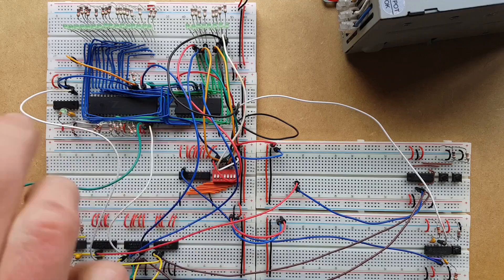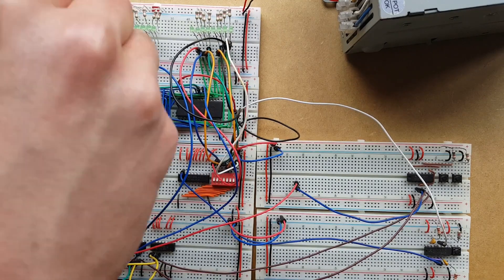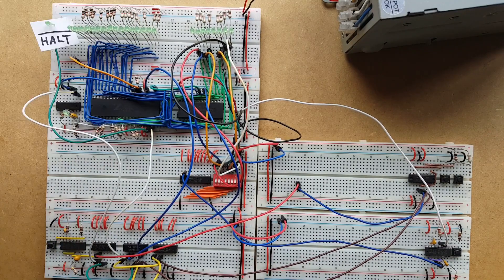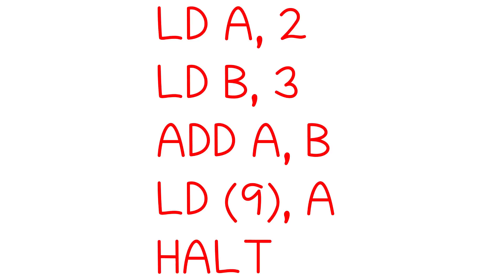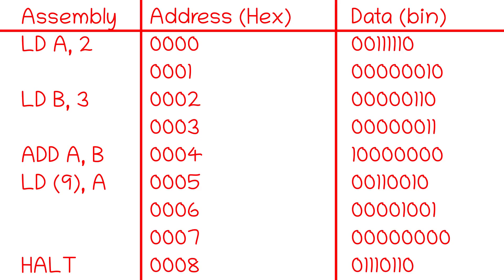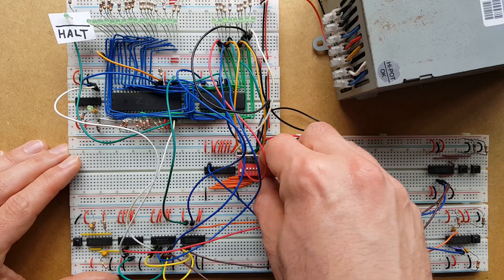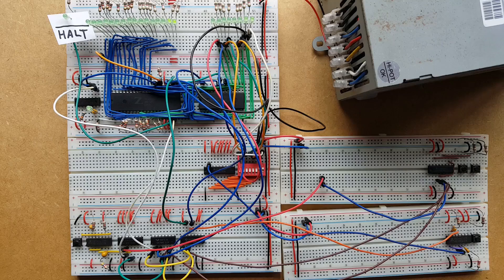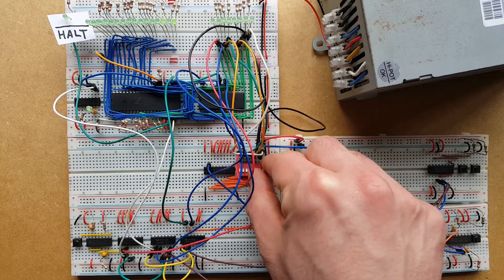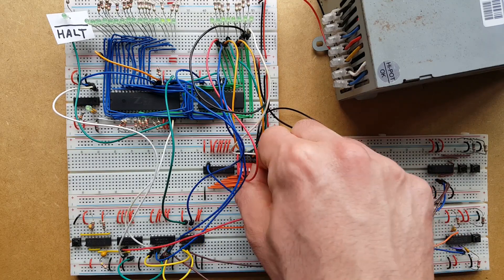All right, we're nearly ready to solve our problem and we better be quick about it because that lunatic that's broken in, he's only gone and drunk a washing up bowl full of Coke. Total Coke addict and now he's buzzing. So what we need to do is convert this assembly language into machine code. Now we can program our computer and then we can hopefully find the answer.